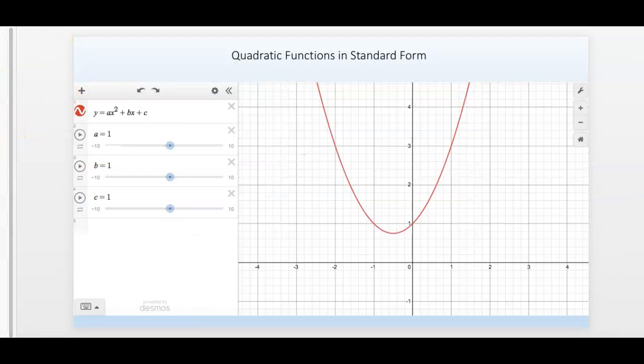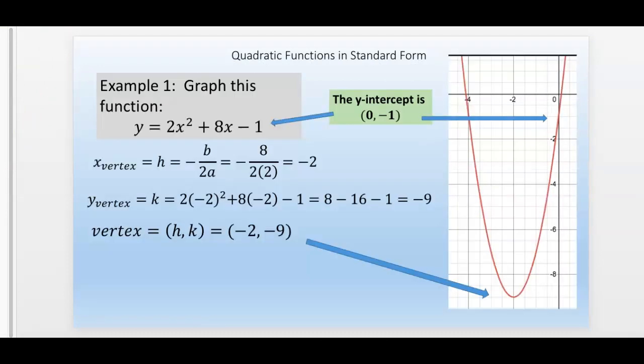Let's look at a couple examples here. Here's example one. Let's say I'm going to graph this right here: 2x² + 8x - 1. Well first, it's pretty easy to find the y-intercept. It's (0, -1).